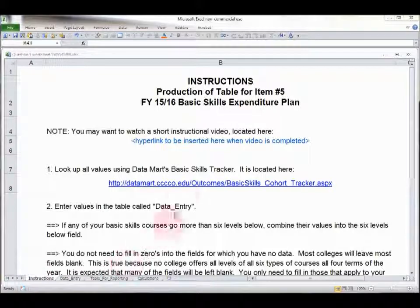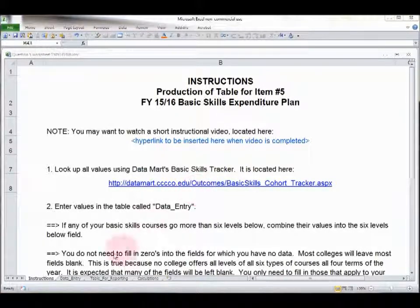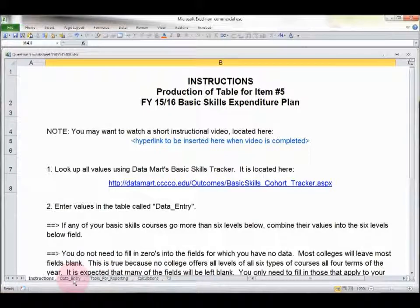On the instructions tab, you'll find a link which will go to this video once the video is put up. This is the place to look for it. You'll also find a link that will go to the basic skills cohort tracker. This is where you're going to get the data to fill in the next tab, which is data entry.